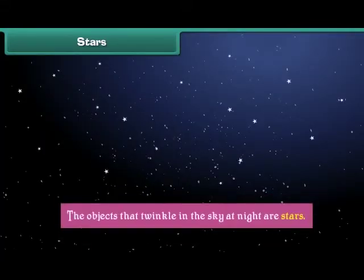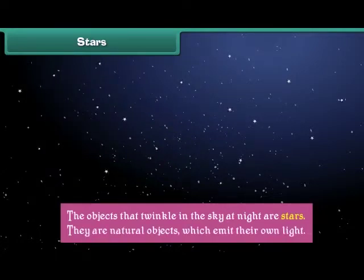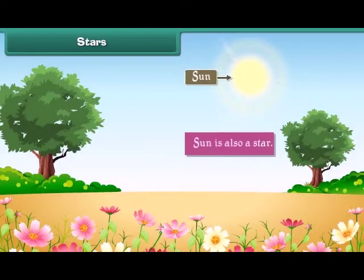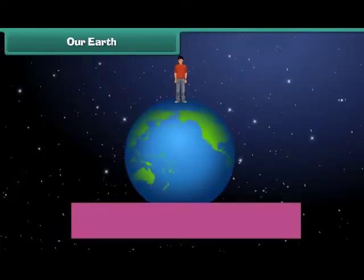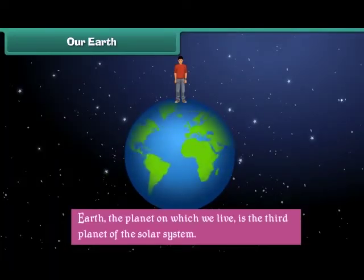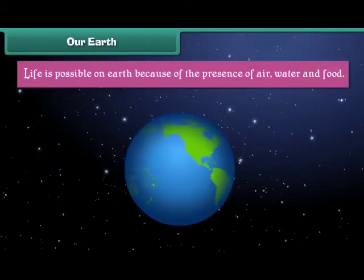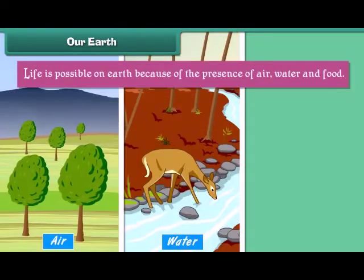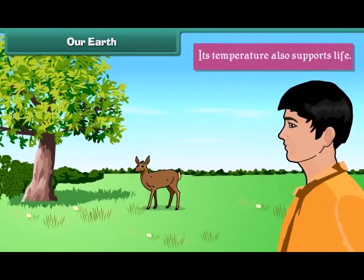The objects that twinkle in the sky at night are stars. They are natural objects which emit their own light. The Sun is also a star. Earth is the third planet of the solar system. Life is possible on Earth because of the presence of air, water and food, and its temperature also supports life.